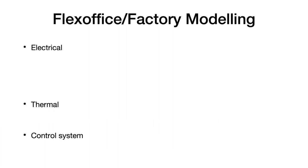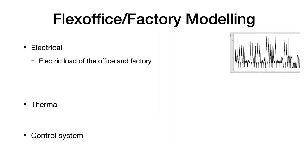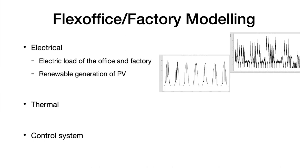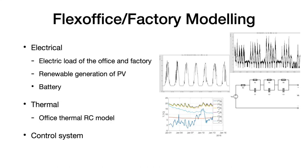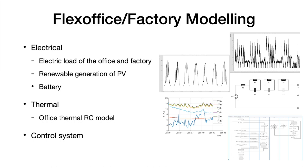For modeling, we separately modeled the electrical and thermal domains for our office and factory. For the electrical part, we imported the electric load directly from our database and set up a photovoltaic model to calculate PV generation from solar radiation data from the weather tower on the KIT campus. For the lithium-ion battery we use as energy storage, we consider it as an equivalent circuit model. For the thermal part, we use a thermal RC model for the office building, developed by our colleague Alexander.